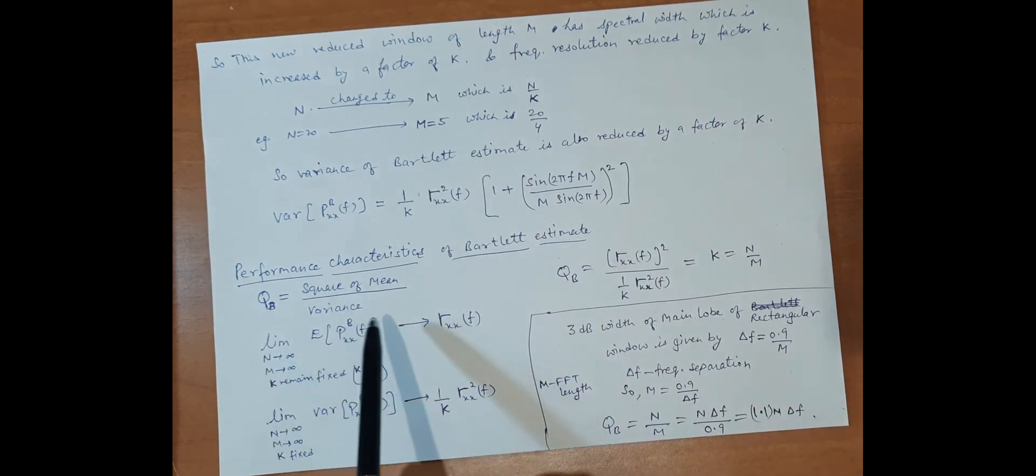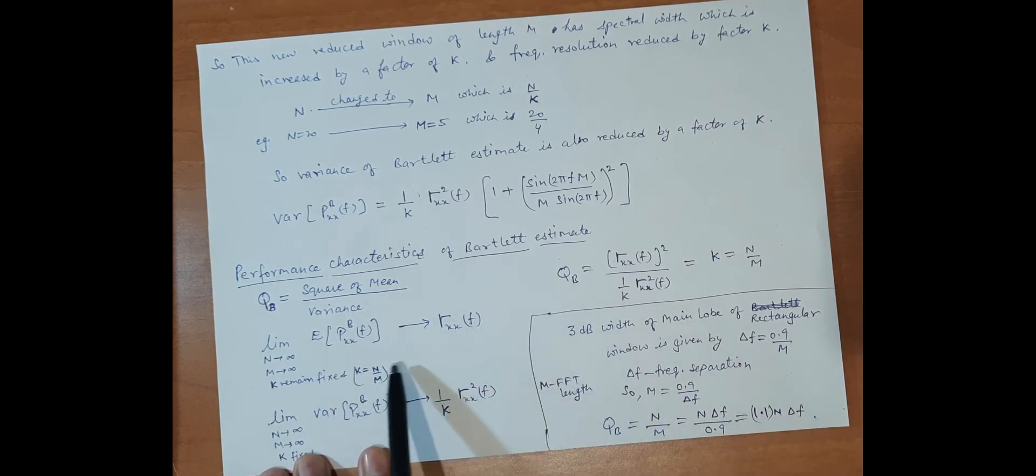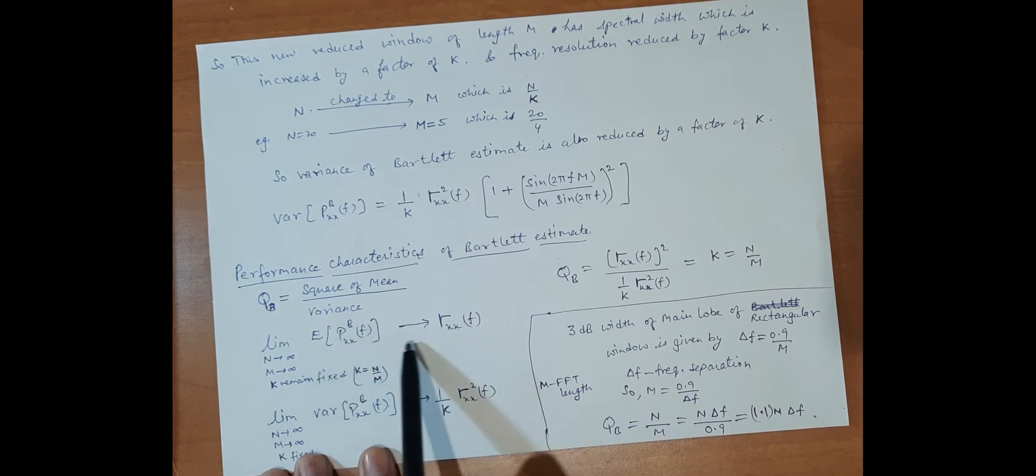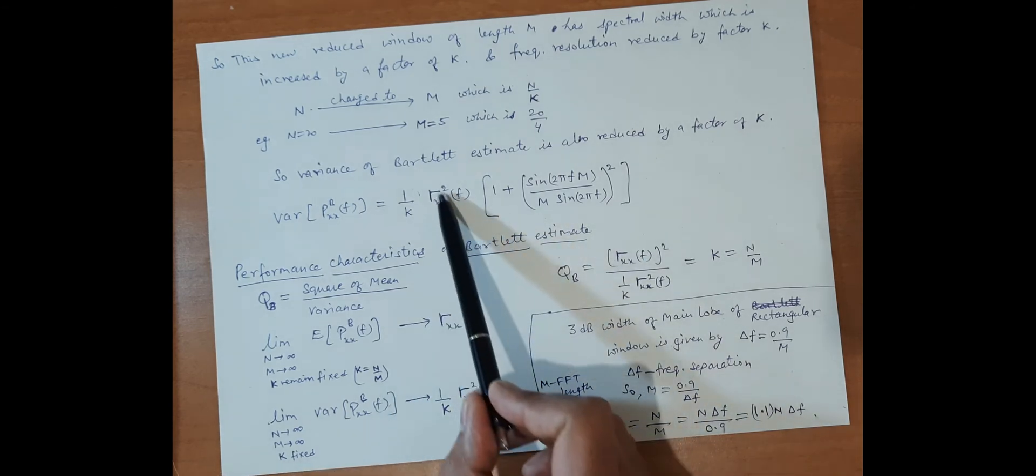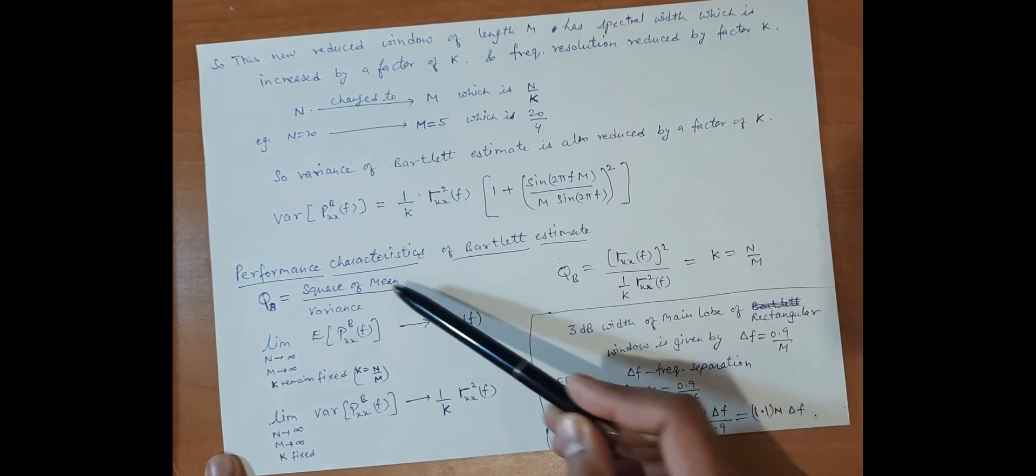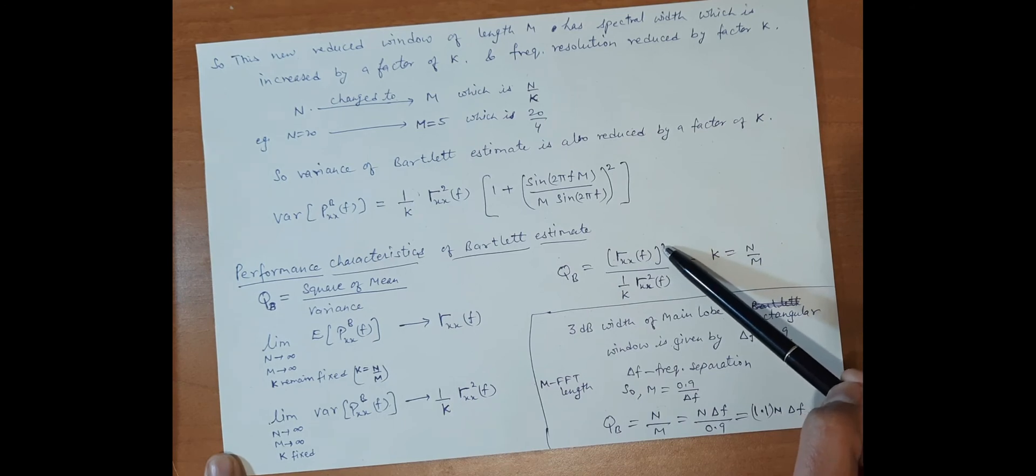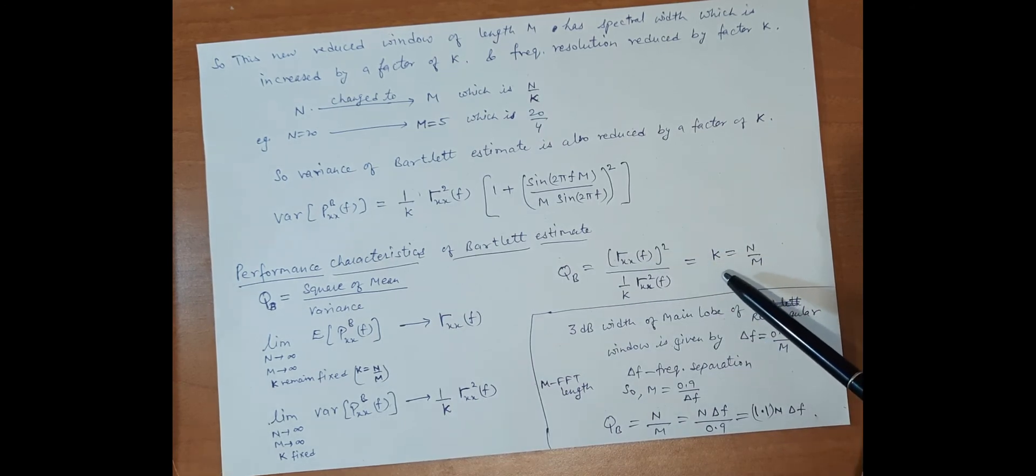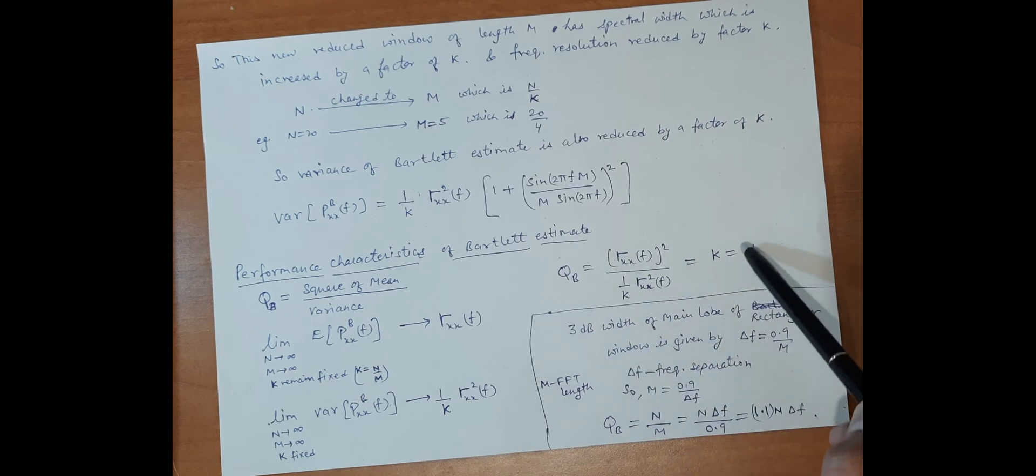The performance characteristics of the Bartlett estimate use the Q parameter, which is used in periodogram: the square of mean upon variance. When m and n are defined with k fixed (k is the ratio of n upon m), the mean becomes γ_xx(f), and variance becomes 1 upon k γ_xx²(f). Putting these expressions gives Q = k = n by m, a specific factor depending on n and m.